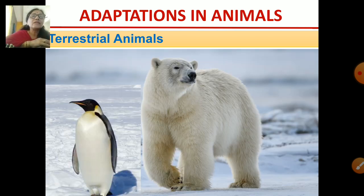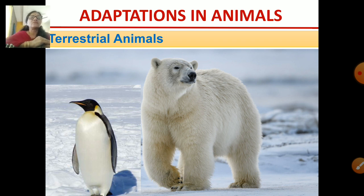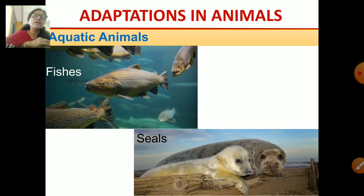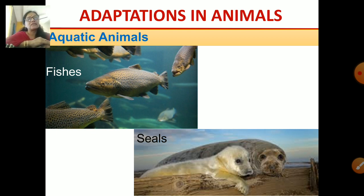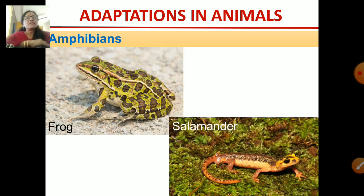These are polar animals which are found in cold climates. The polar region is very cold — this is the polar bear, and penguins are also found in cold regions. These are some aquatic animals — fish, which are found in water. Other animals which live in water include seals, as you can see in the picture.